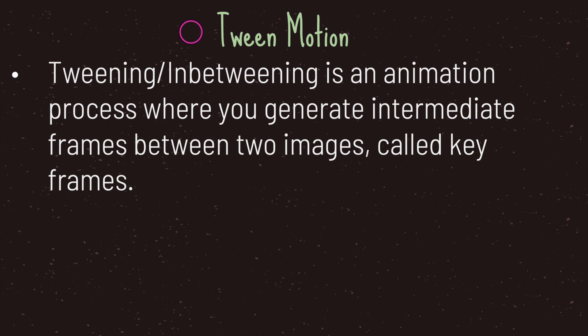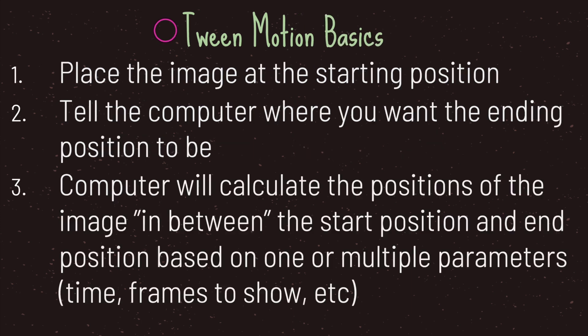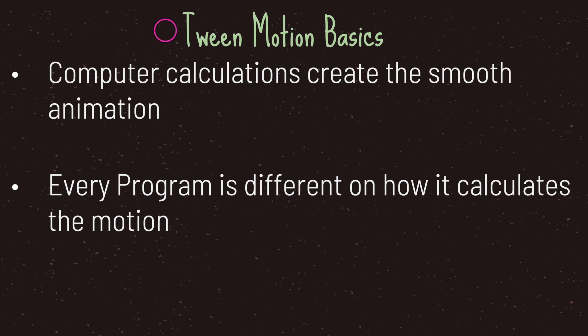The second type of animation is tween motion, also referred to as tweening and in-betweening. Tween motion is an animation process where you generate intermediate frames between two images, called key frames. The basics are fairly simple: first, you place the image at a starting point, then you tell the computer where the ending position should be, and the computer calculates the positions of images in between based on parameters. The most common parameters are time and frames per second, though other parameters depend on the application.